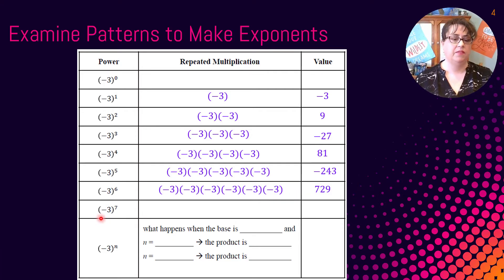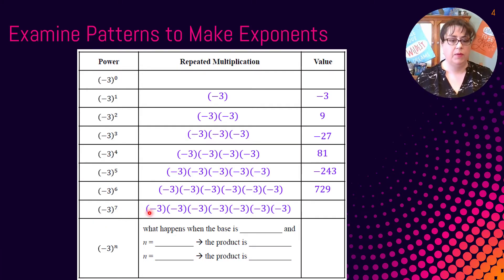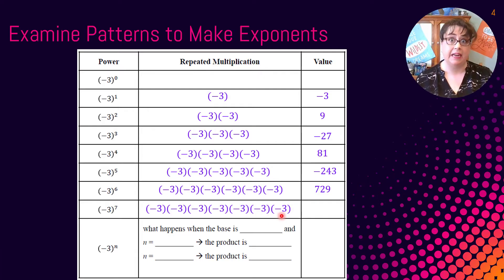Negative 3 to the power of 7: we have seven negative 3s. Positive 729 times negative 3 — we know our answer is negative — gives negative 2,187.